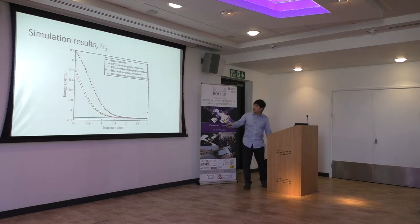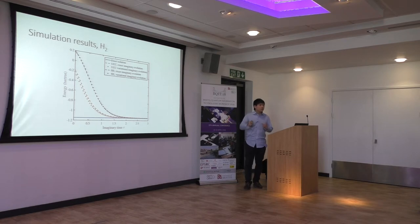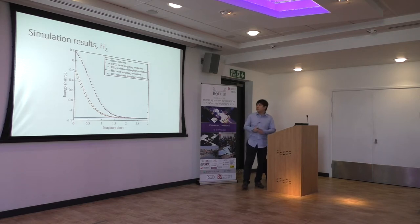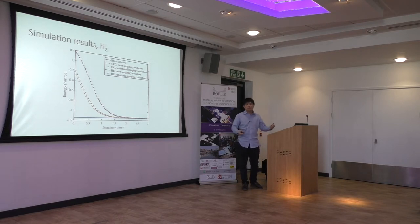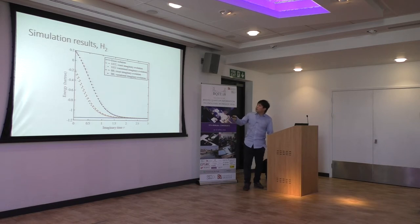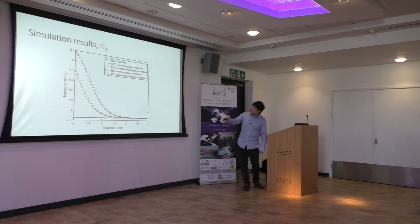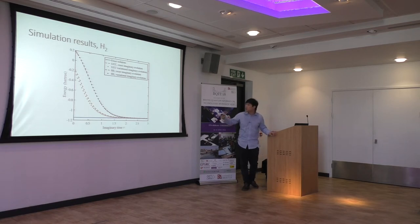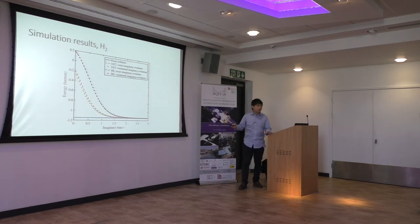Here is the simulation result. The x-axis is the imaginary time tau and the y-axis is the energy. At time tau = 0 we choose random parameters for the ansatz, then evolve the state according to imaginary time with the variational method. The dashed line is the exact imaginary time evolution — since we only have two qubits we can compute this exactly. The dots show the variational imaginary time result — the projected evolution. They are quite close, especially for the hardware efficient ansatz with more parameters, and all converge to the ground state.